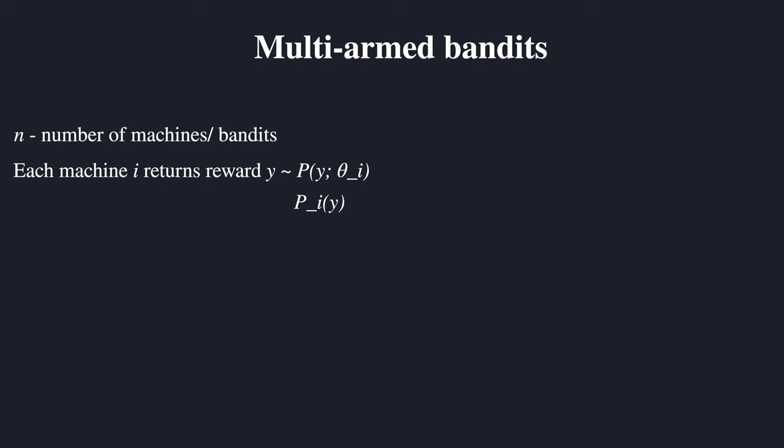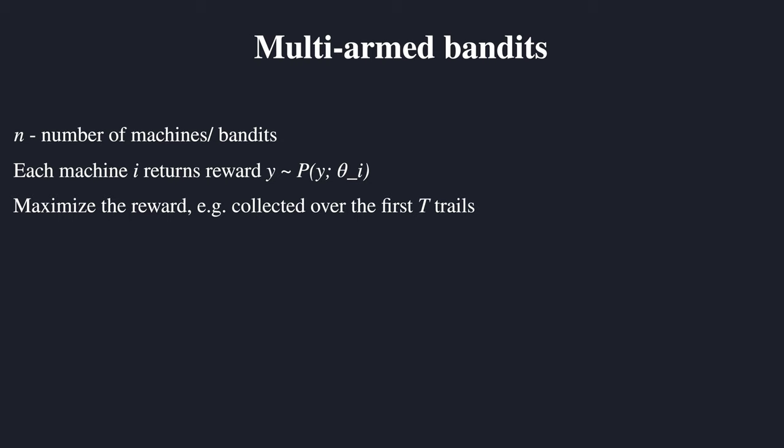It isn't that important to worry about theta_i — it is just nice to have seen it because it is relatively common notation in machine learning literature. The last thing is: what do we optimize for? Well, the goal will be to maximize the reward collected in the first T trials.